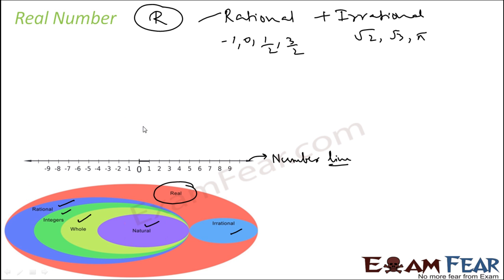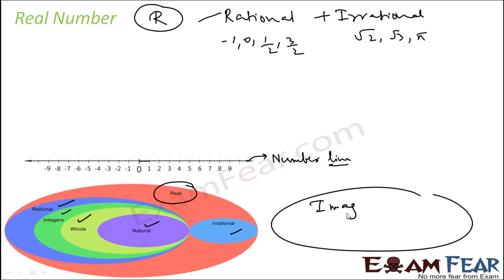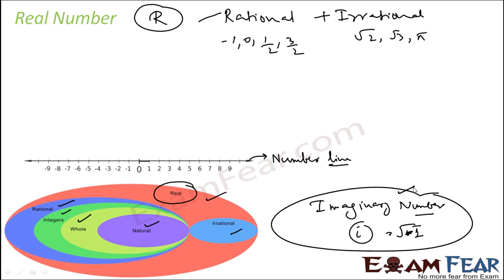Apart from real numbers, there is something called imaginary numbers. Imaginary numbers don't exist — they are imaginary, denoted by i, which is the square root of minus 1. We will not talk about imaginary numbers in this class; maybe in a higher class you will understand them. The whole number system consists of real numbers and imaginary numbers — you can write something like 2 plus 3i, where 2 is the real part and 3i is the imaginary part. For now, this is not required.